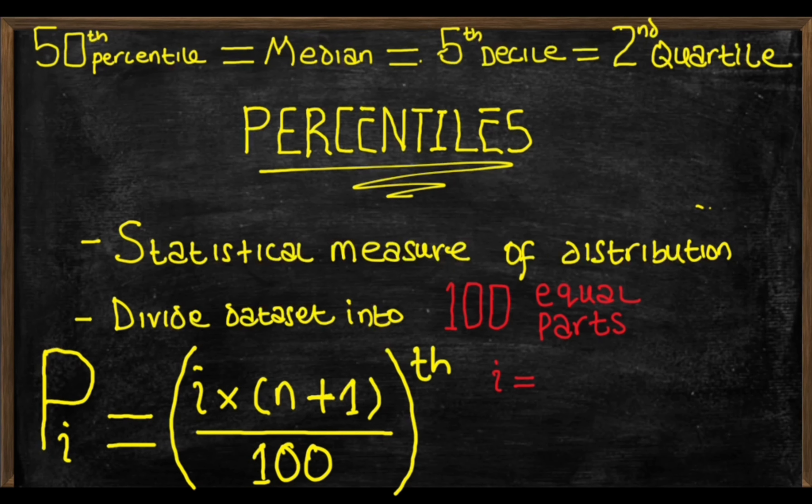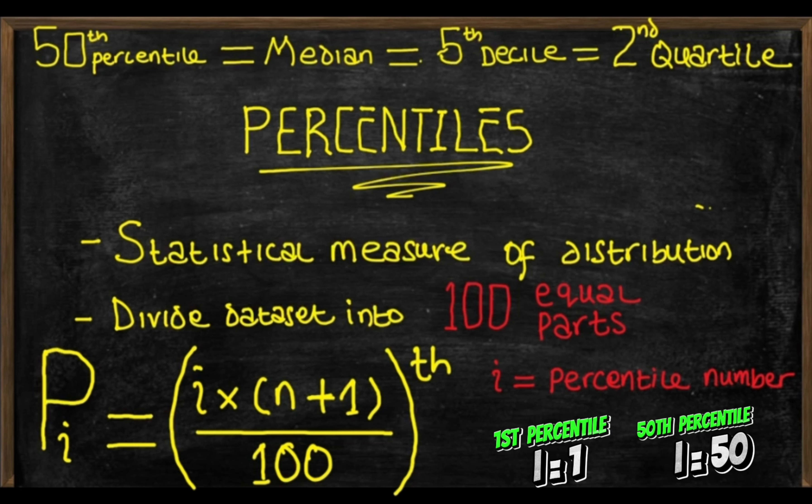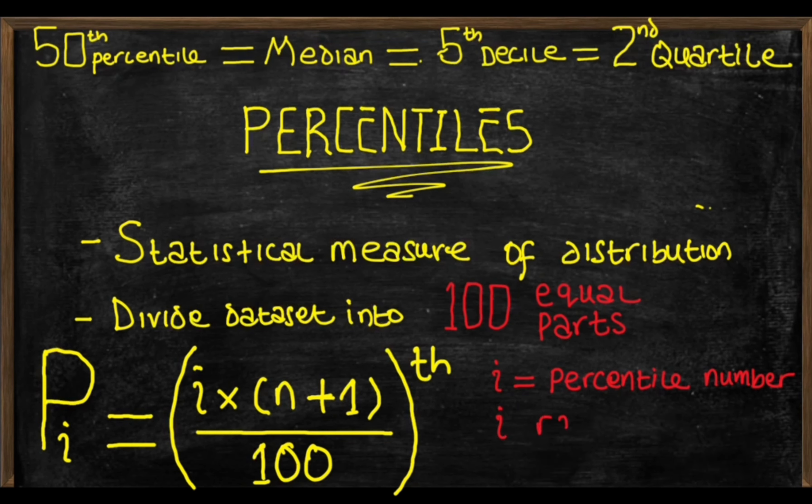Where i is the percentile number. So, for the first percentile, i will be 1 and for example, the 50th percentile, i will be 50 and so on. So, i will range from 1 to 99, right? Since we have only 99 percentiles.